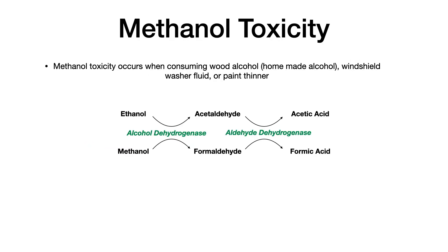Methanol toxicity occurs when somebody consumes wood alcohol, i.e. home alcohol, windshield washer fluid, or paint thinner. You absolutely need to know this pathway: methanol gets converted to formaldehyde by alcohol dehydrogenase. Formaldehyde then gets converted to formic acid by aldehyde dehydrogenase. Likewise, ethanol gets converted to acetaldehyde by alcohol dehydrogenase, and then acetaldehyde gets converted to acetic acid also by aldehyde dehydrogenase.